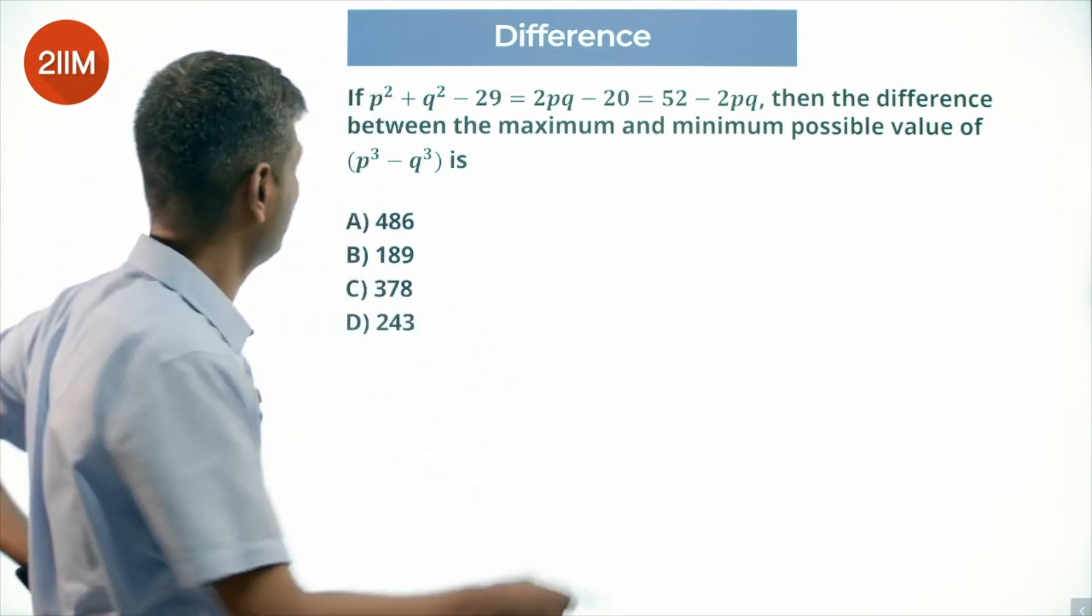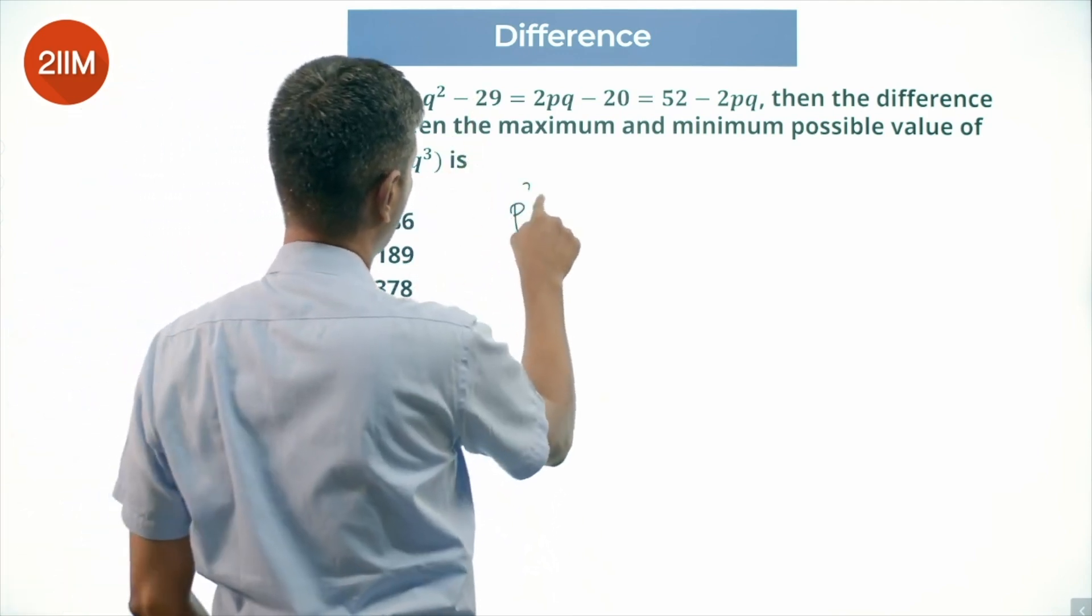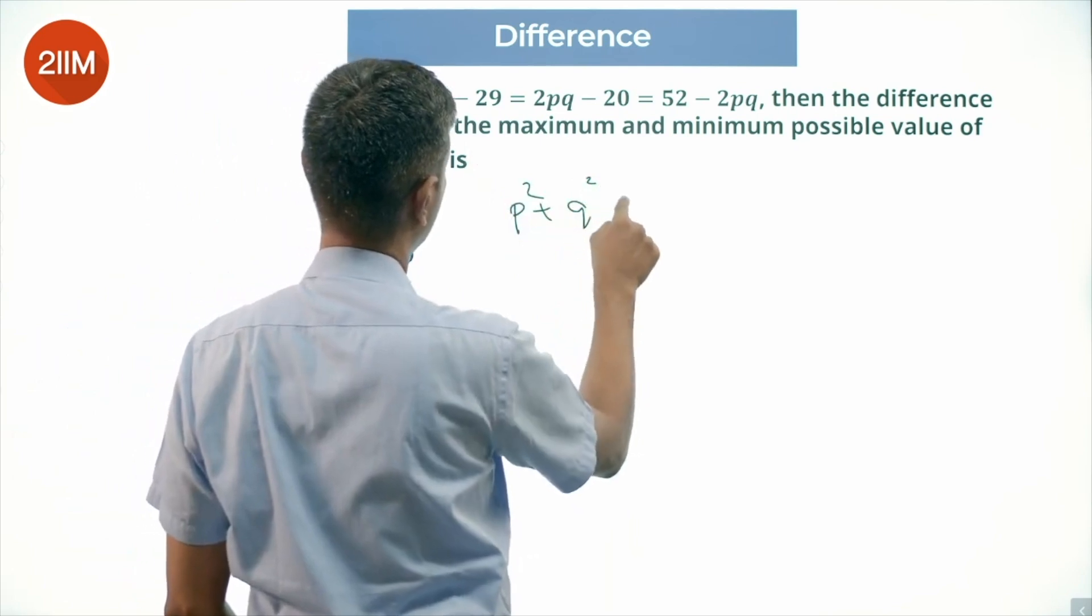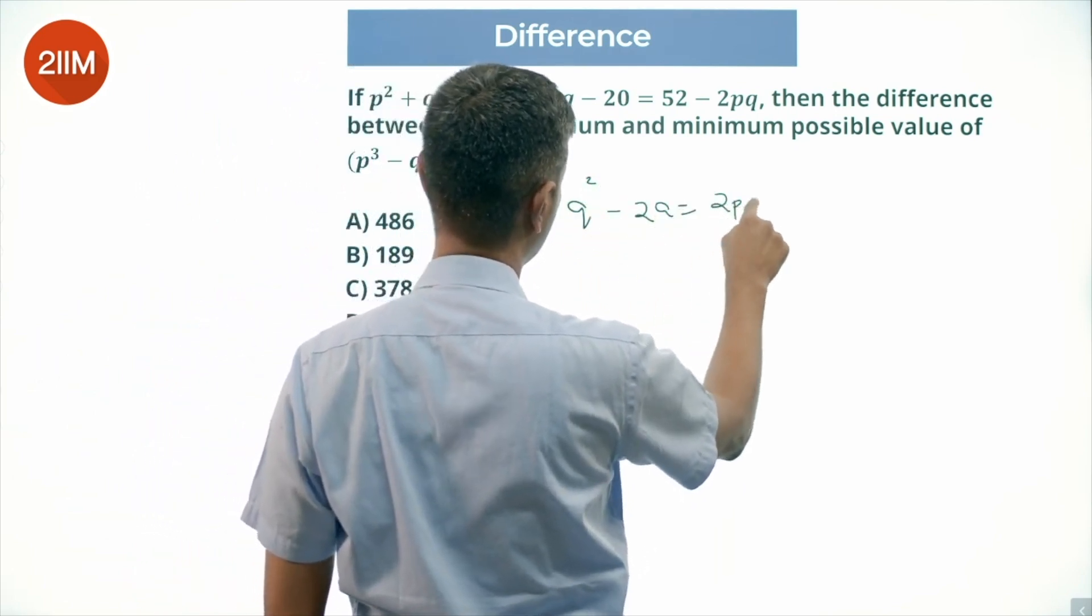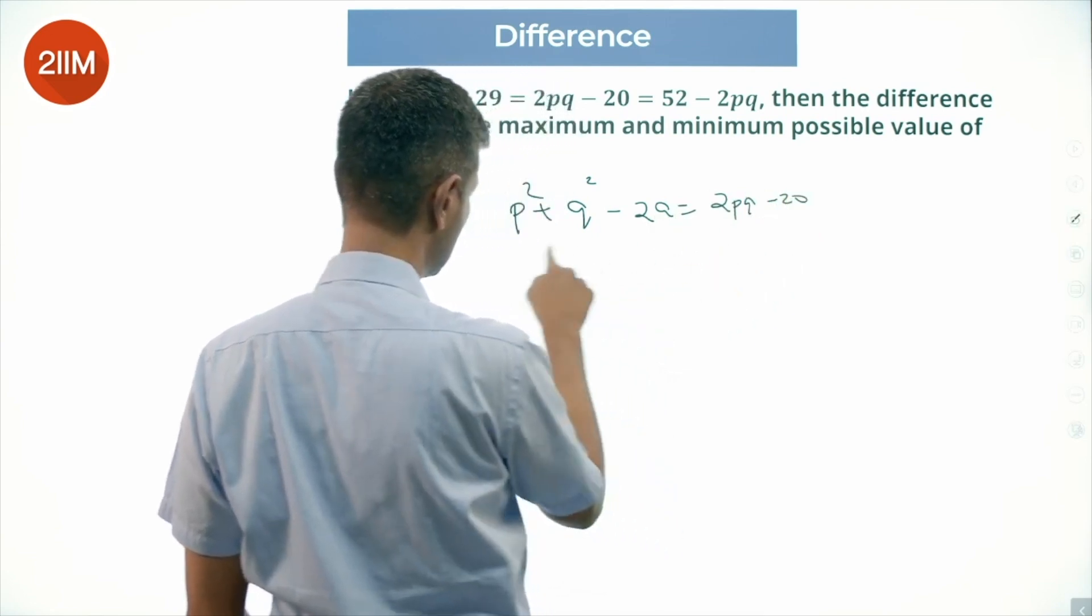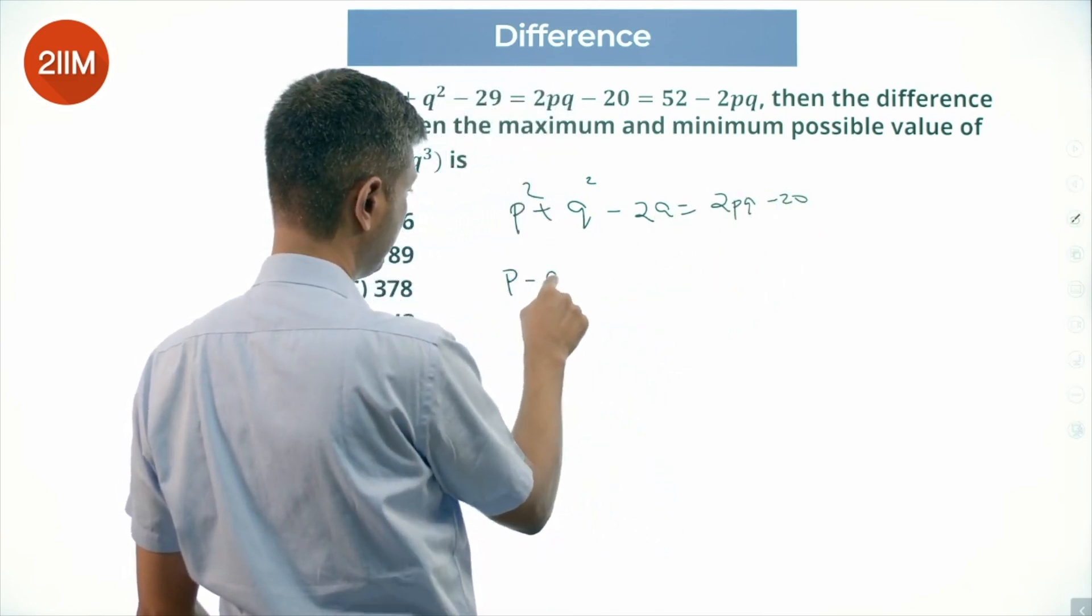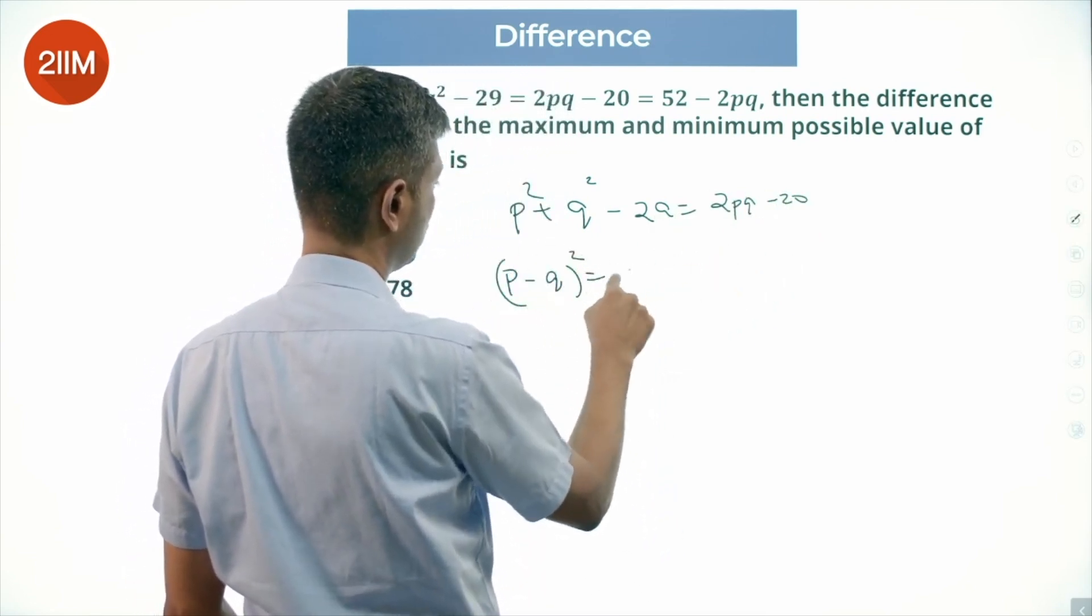Lovely question. What do we do? We take this and say P square plus Q square minus 29 equals 2PQ minus 20, or P minus Q whole square equals 49.